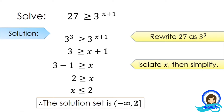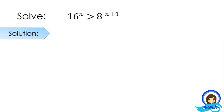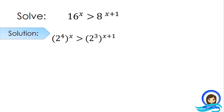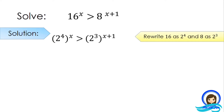Let's have another example. We have 16 to the power of x is greater than 8 to the power of x plus 1. The first thing to do is to make sure that the bases are equal. We rewrite 16 as 2 to the power of 4 and 8 as 2 cubed, because 2 to the power of 4 is 16 and 2 to the power of 3 is 8. Now they already have the same base.